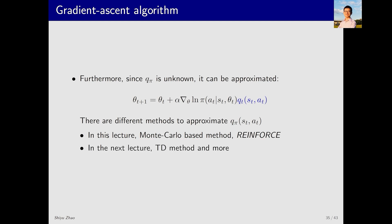In addition to the Monte Carlo method, there is another method for estimating action values: the TD method. If we combine the TD method with the policy gradient algorithm, we get a series of algorithms called Actor-Critic, which we will cover in the next lecture.